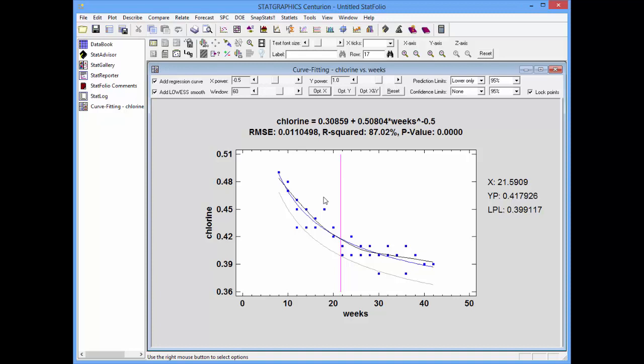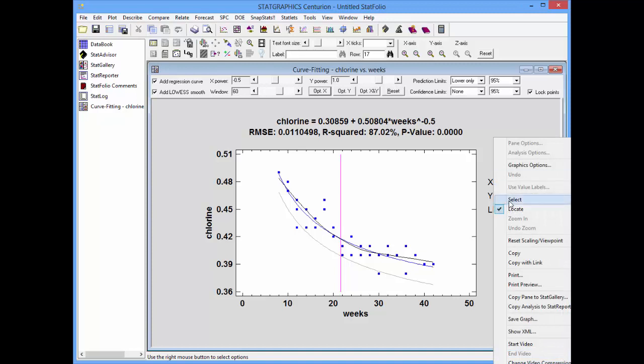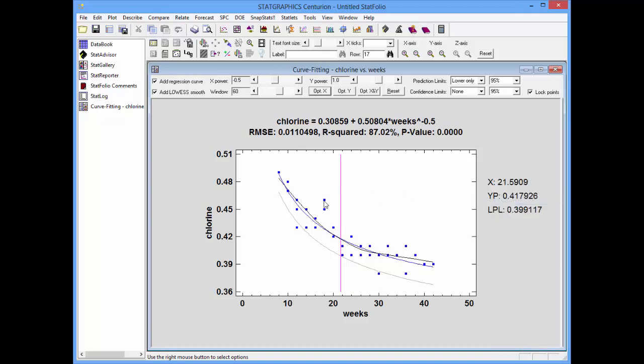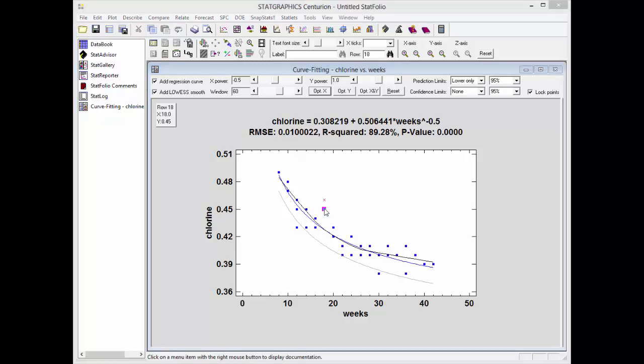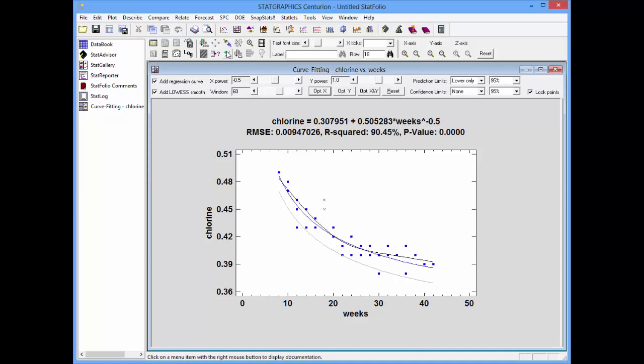One other thing you'll notice is that there are two points both at 18 weeks that don't appear to fit the model as well as some of the other points. If I'd like to see how sensitive my results are to those points, I can do one of two things. I could first go and move my check mark back to select. I could then click on one of those points and hit the plus minus button on the analysis toolbar. The model will now be refit without that particular data point. Or I could remove this point as well. And you'll see a slight change in the model. In fact, the R squared goes up to about 90%.